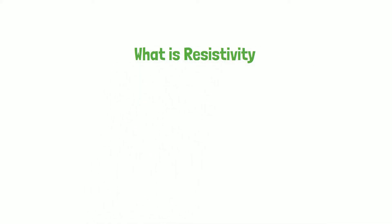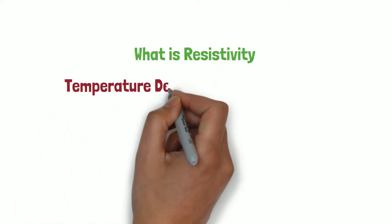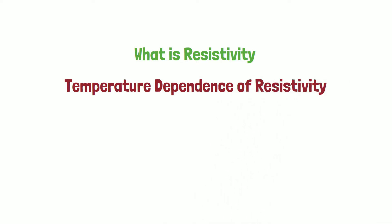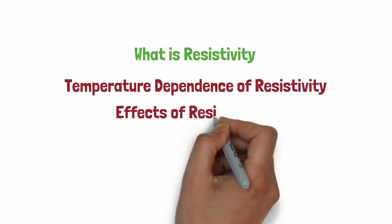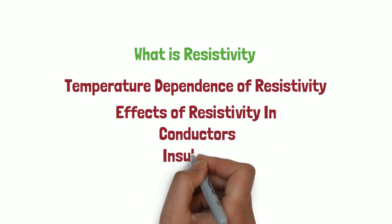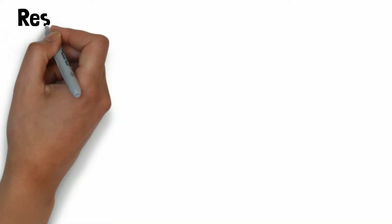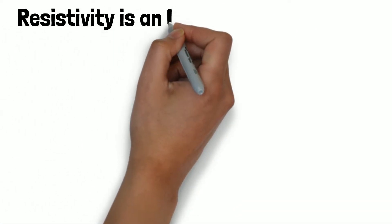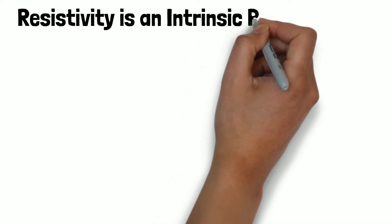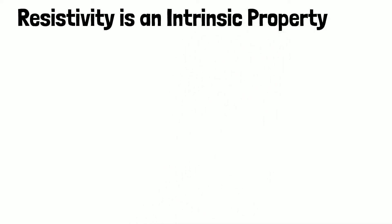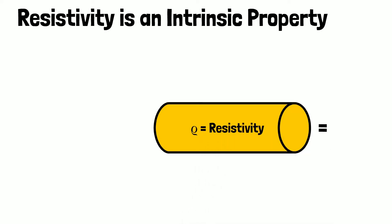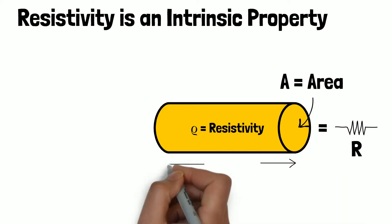What is resistivity? Resistivity is an intrinsic property of a material. It is a constant for a material under a given temperature. The resistivity of a material can be defined as the resistance of the material of unit cross-sectional area and unit length.